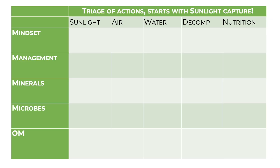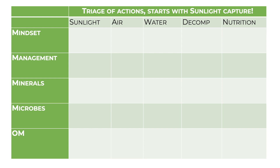Part of my approach is to look at a hierarchy of needs: sunlight, air, water, decomposition and nutrient. I also look through this in terms of my Five M's. The Five M's ask the question of what is really causing the issue — why am I losing photosynthesis, why have I got compaction, why have I got water repellency. The Five M's are: Mindset, Management, Minerals, Microbes and Organic Matter — and they dictate what the outcome is.